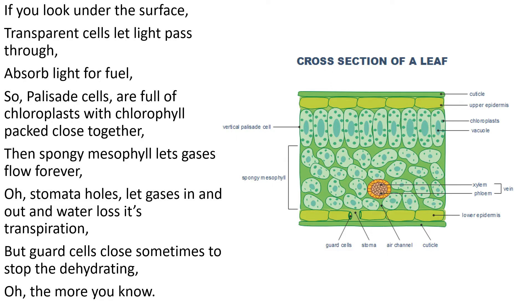Absorb light for fuel. So, palisade cells are full of chloroplasts with chlorophyll packed close together, then spongy mesophyll lets gases flow forever.